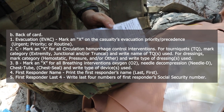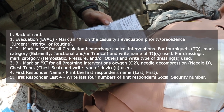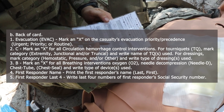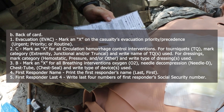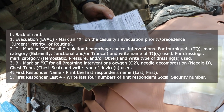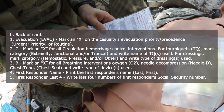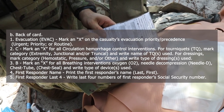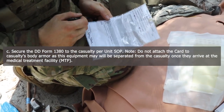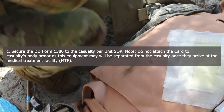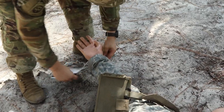In Column B, mark an X for all breathing interventions used, including needle decompression. In Column D, label chest tube or chest seal and write the type of devices used. In Block 4, print the first responder's name legibly. In Block 5, record the first responder's last four digits of their SSN. Once complete, secure the DD Form 1380 to the casualty per unit SOP — for this unit, it will be hung on the arm using a retainer band. That is the end of this lane.